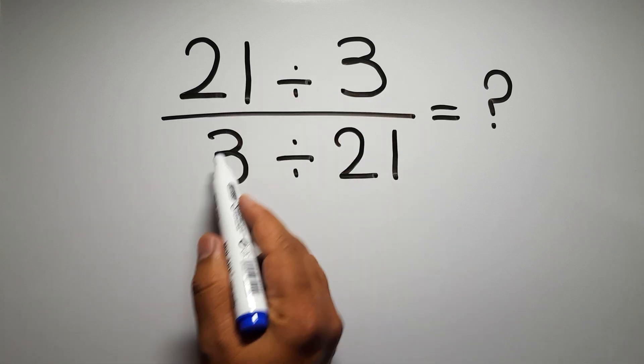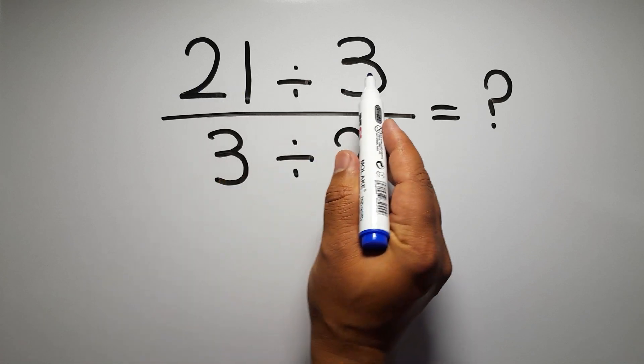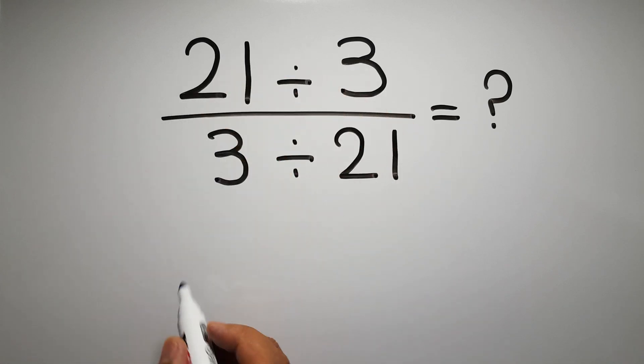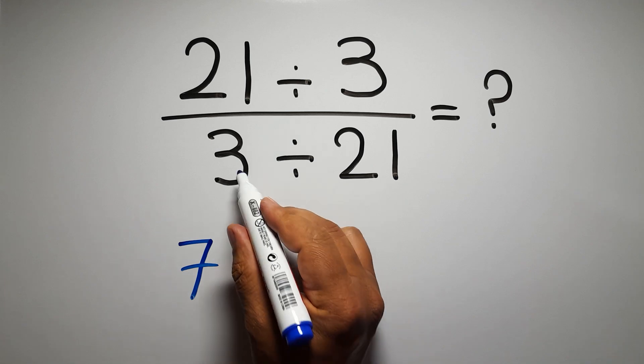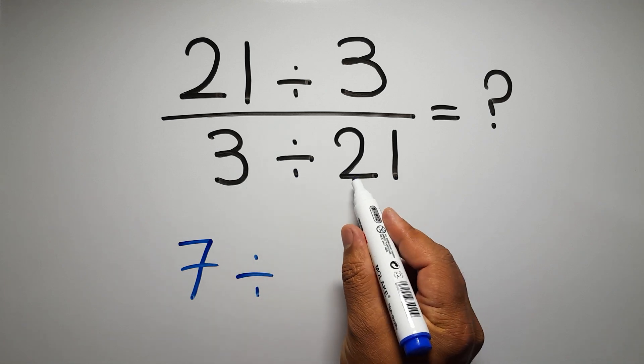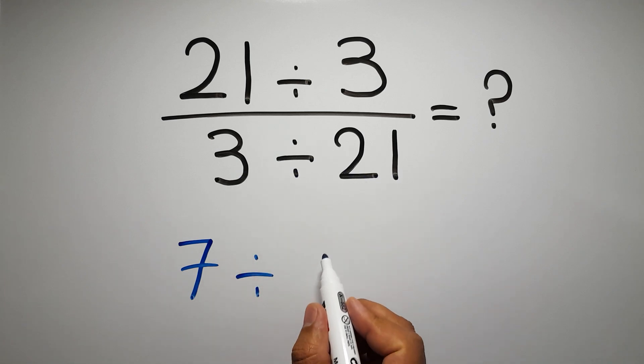So 21 divided by 3 gives us 7. So we have 7 divided by 3 divided by 21. We can write 3 over 21.